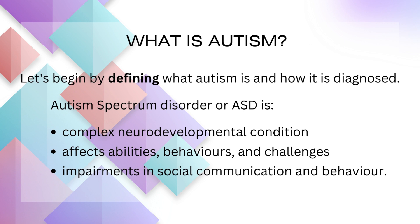Autism Spectrum Disorder, or ASD, is a complex neurodevelopmental condition that affects individuals across a wide range of abilities, behaviors, and challenges. It is referred to as a spectrum because it manifests differently in each person. Some individuals with autism may have mild challenges, while others may have more severe impairments in social communication and behavior.